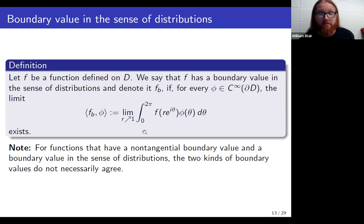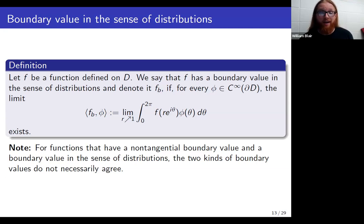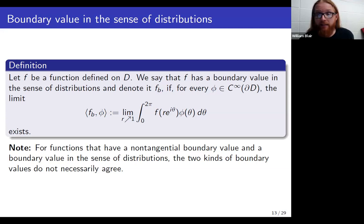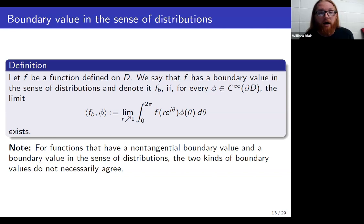One thing to point out if this is the first time you've thought about these kinds of objects is that just because a function has a non-tangential boundary value and a boundary value in the sense of distributions, there is no reason to believe a priori that those two objects agree in a meaningful way. Sometimes they do, but that would be a big conclusion to jump to.